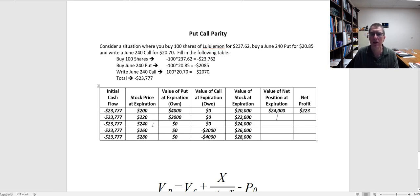How about if the stock goes to $220? My put is worth $2,000. I don't owe anything on the call. The stock is worth $22,000. I add those up, it's worth $24,000, giving me a profit of $223.